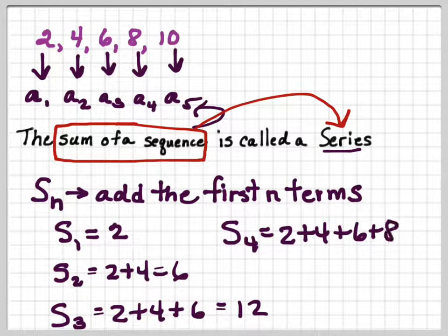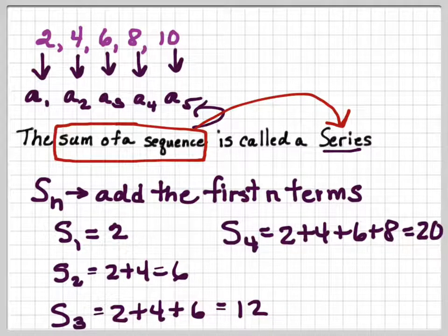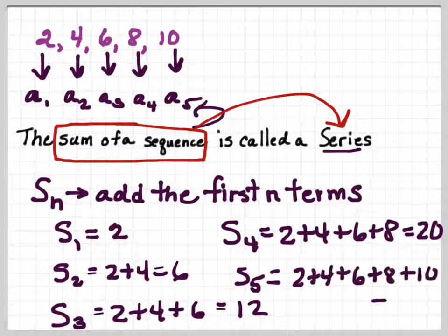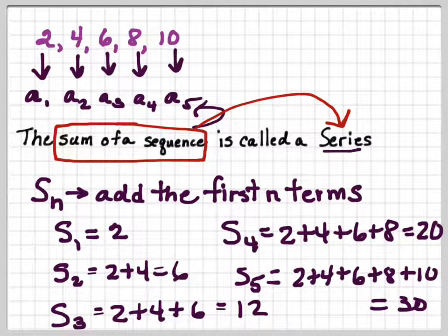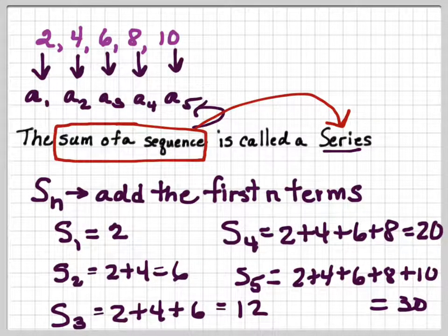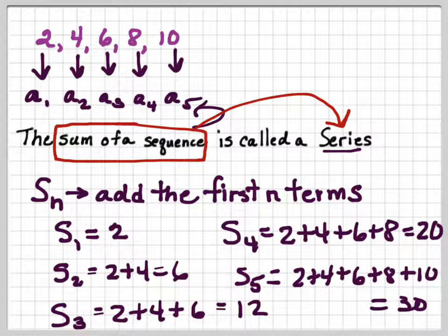S sub 4 would be 2 plus 4 plus 6 plus 8, which is 20. S sub 5, 2 plus 4 plus 6 plus 8 plus 10, which is 30. So you get the point here that all you're doing is plugging numbers in from the sequence, adding them together to get the series.